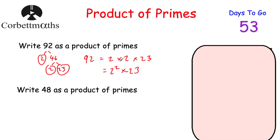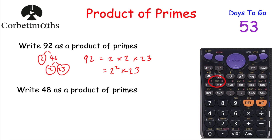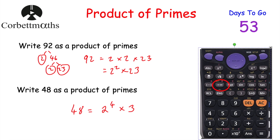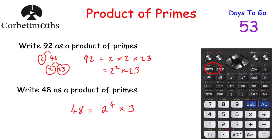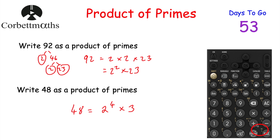To write 48 as a product of primes using your calculator: you'll see the word FACT in yellow — that means prime factorisation. Type in 48, press equals, then press Shift and then that button, and it writes it as a product of primes: 2⁴ × 3. If you've got the other model, press 48, press equals, then press Shift and the same button. For the third type, type 48, press equals or EXE, then press the Format button, go down to Prime Factor, press EXE, and it gives you 2⁴ × 3.